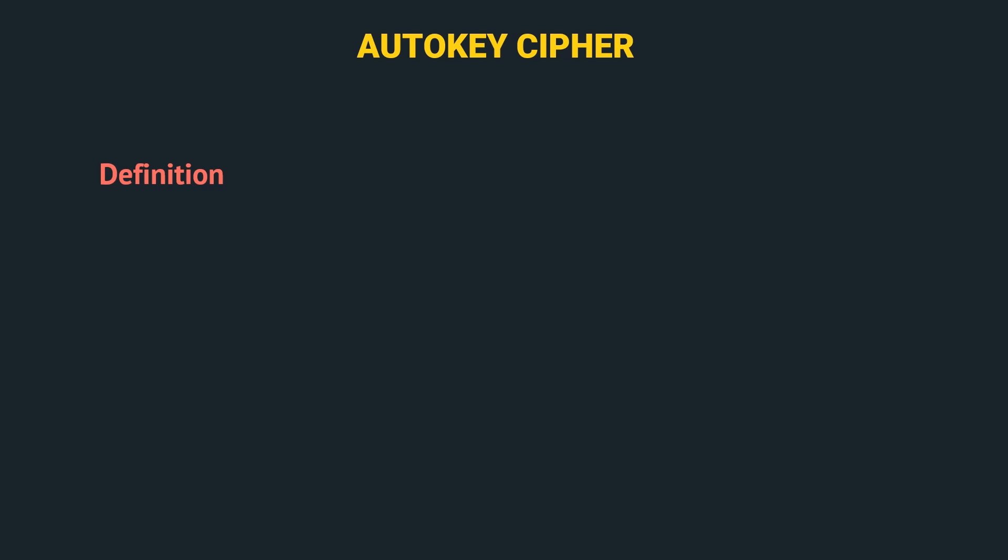Let's start with the definition of the auto-key cipher. As we have seen in the previous video, in a polyalphabetic cipher, we represent plain text, ciphertext, and key as a stream of characters rather than a single unit. We represent plain text as p1, p2, p3, where pi is the ith character of the plain text. The domain of the plain text is Z26.